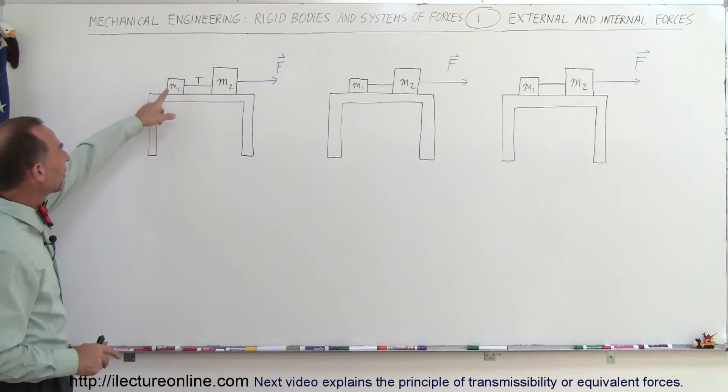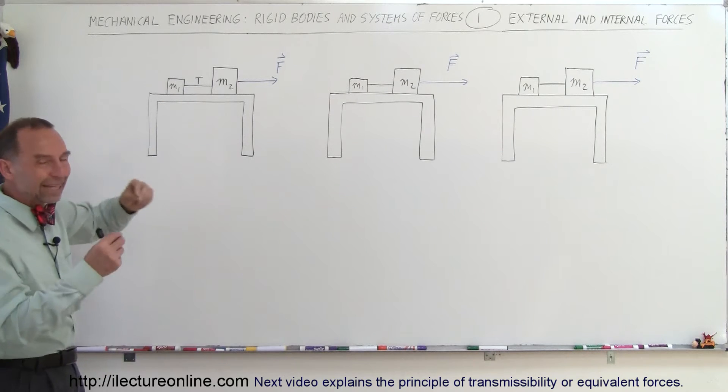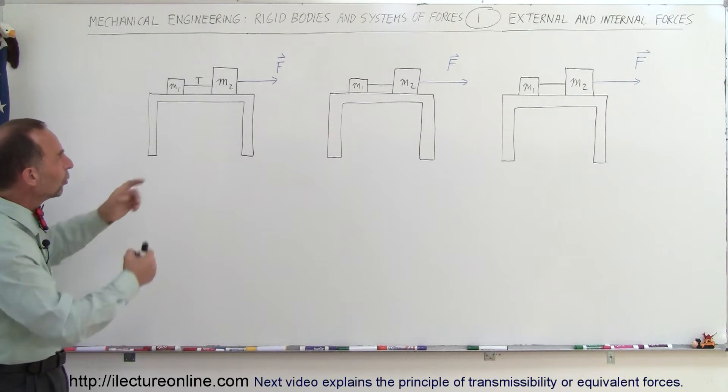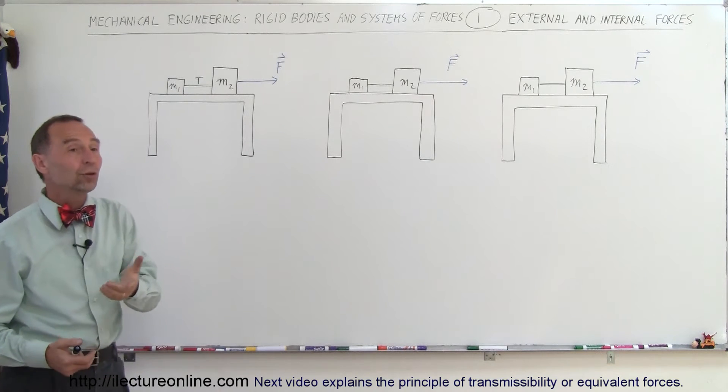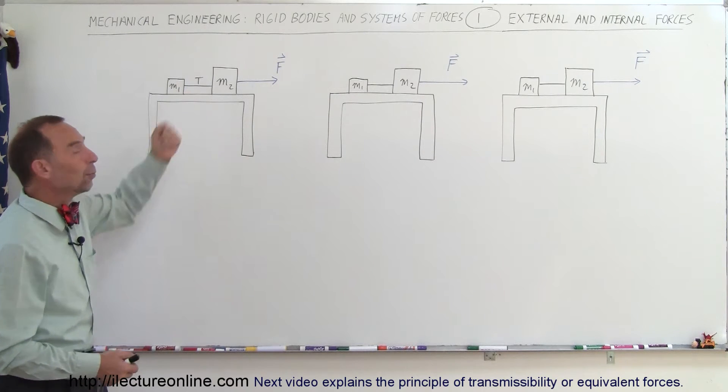So here we have two objects, M1 and M2. They're connected with a string and so if you pull on M2, there's going to be tension on the string between M1 and M2 so that the tension will cause M1 to move.